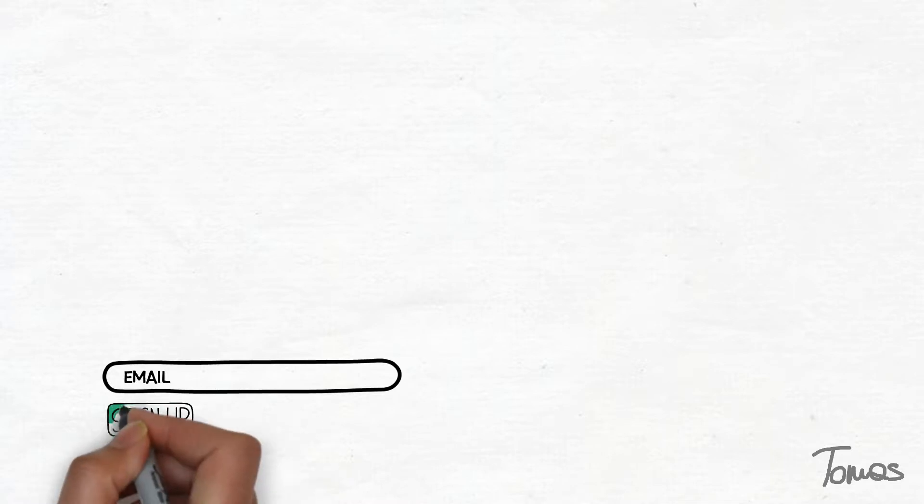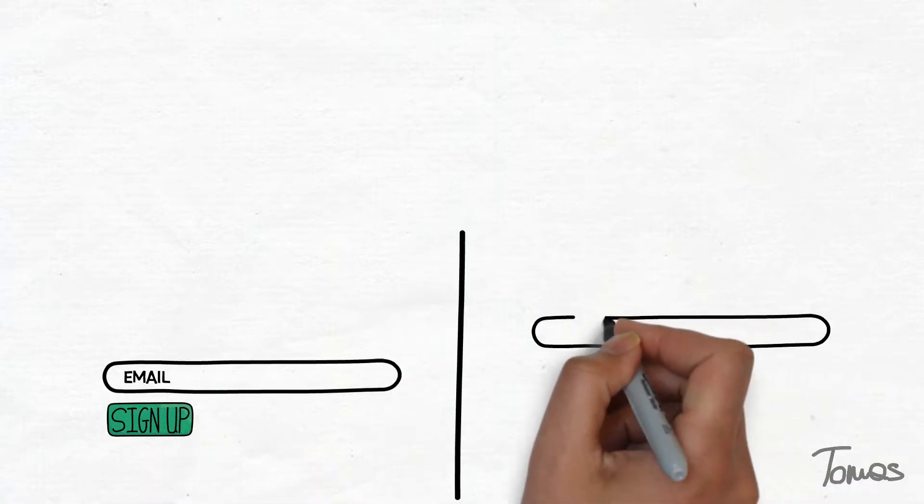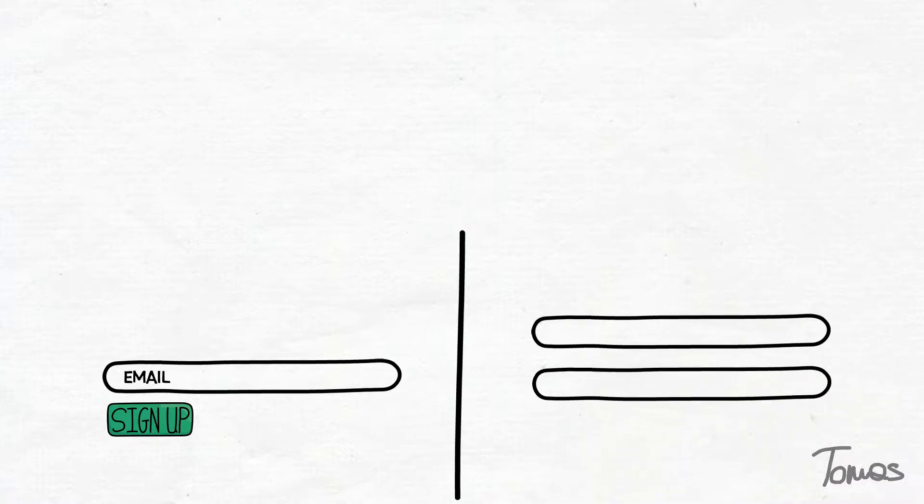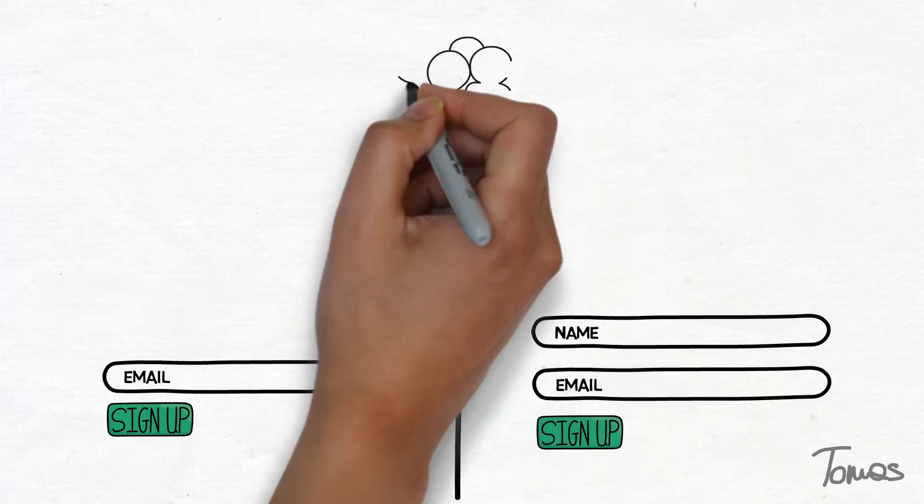So we have the original form with the email capture field and a sign-up button. And we create a different version with the name field, email field, and the same sign-up button. We'll call our original A and the new version B.